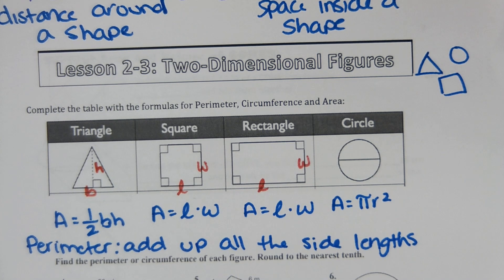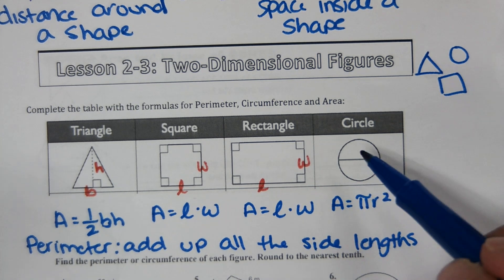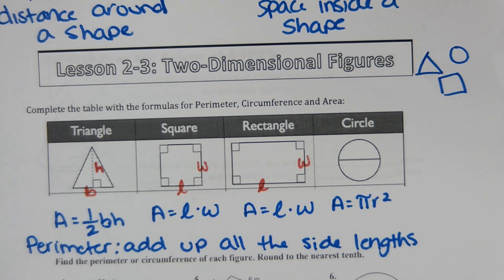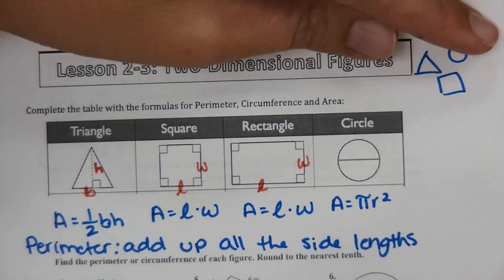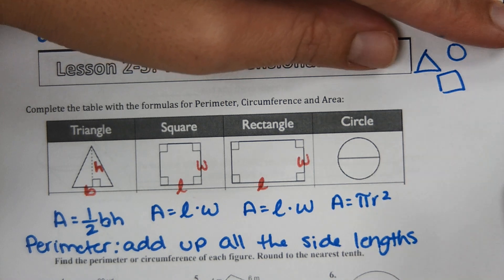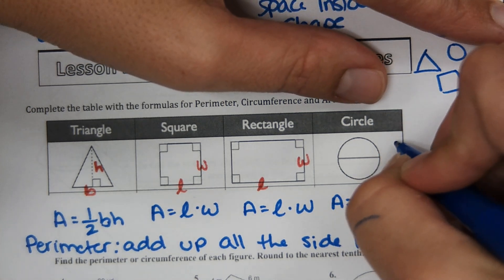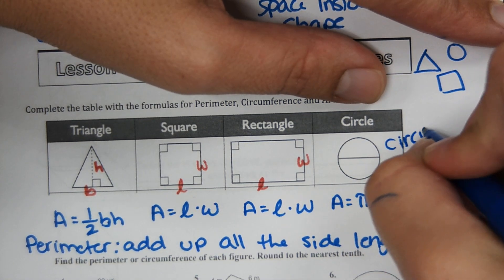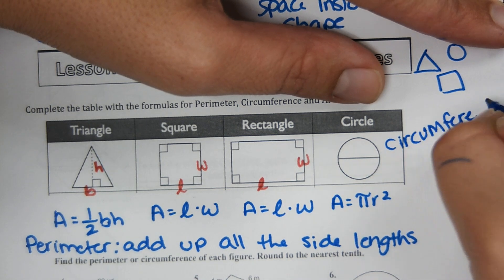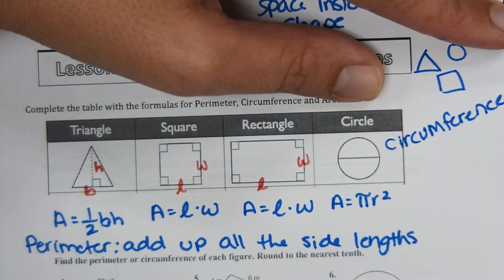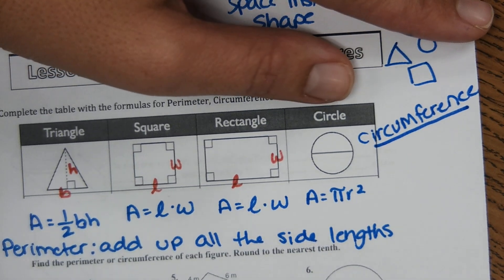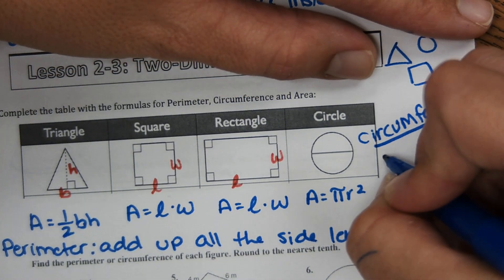But what about a circle? It doesn't really have side lengths. For a circle, the perimeter we actually call circumference. Circumference is essentially the perimeter of a circle — it's the distance around a circle.